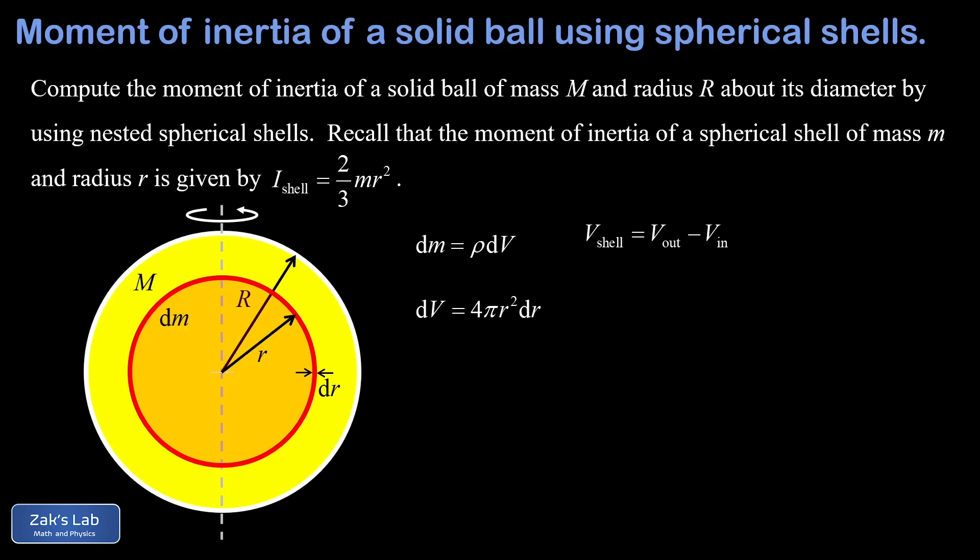So we're just deleting the interior of a solid sphere to get the volume of the shell. This gives us 4 thirds pi times the quantity r plus dr cubed, that's the volume of the outer sphere, minus 4 thirds pi times little r cubed, that's the volume of the inner sphere. And it leaves us with the volume of a spherical shell with a thickness of dr.